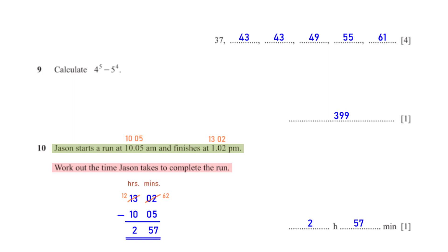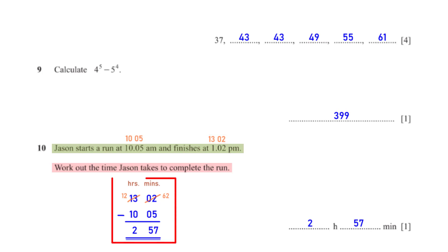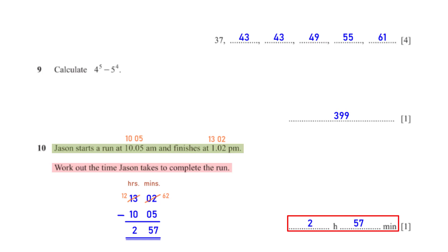Jason starts a run at 10:05 am and finishes at 1:02 pm. Work out the time Jason takes to complete the run. 10:05 am is 10:05 on the 24-hour clock and 1:02 pm is 13:02. To get the duration, we subtract: under the minutes column we can't subtract 5 from 2, so we borrow 1 hour (60 minutes), giving 62 − 5 = 57 minutes. Under the hours column, 12 − 10 = 2. So the time duration is 2 hours 57 minutes.